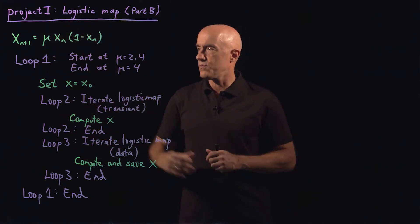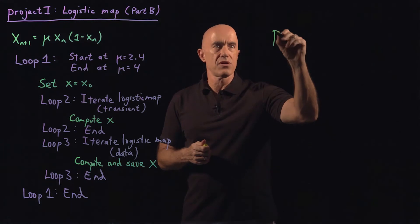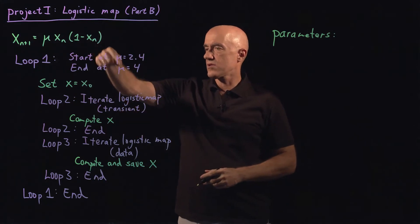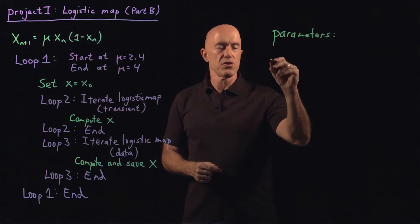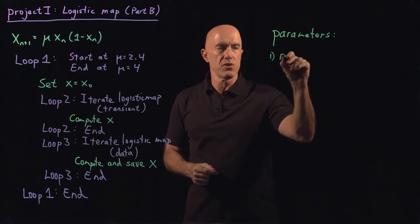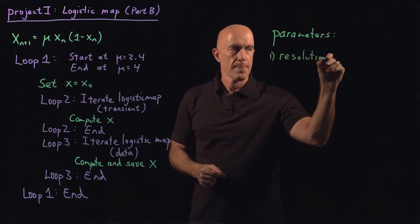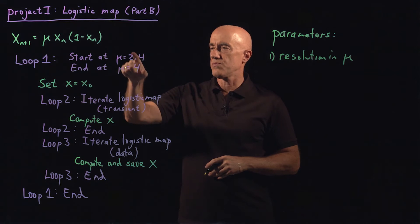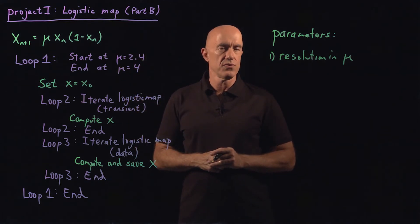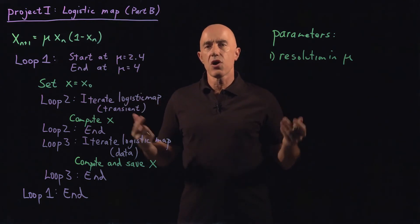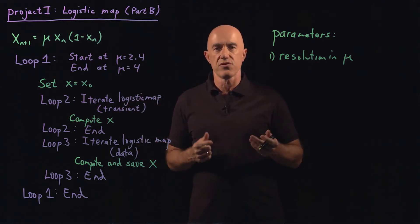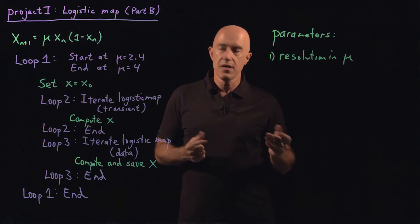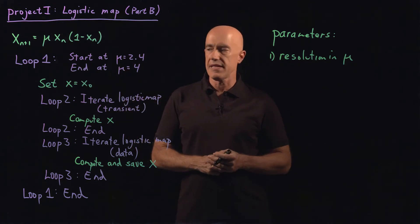So three loops. The parameters that have to be set: you're going through the values of mu, so you'll need the resolution in mu — how many different values of mu do you want to compute between 2.4 and 4. You can use linspace to set that. In the code I will set it for you because I need to grade your solution and match my grader with your solution, but in normal practice you would decide that on your own.